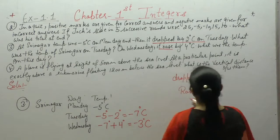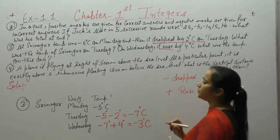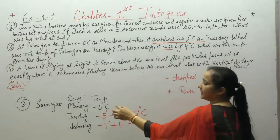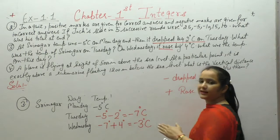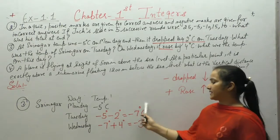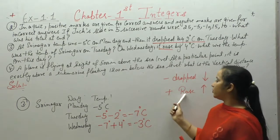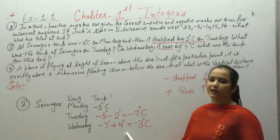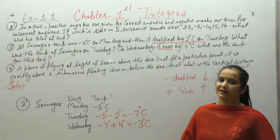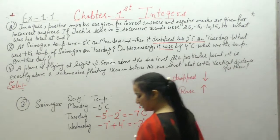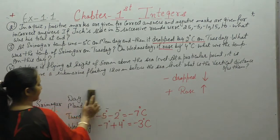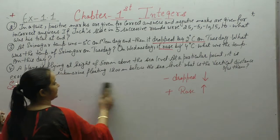'Rose' means increased, so positive sign. 'Dropped' means decreased, so negative sign. Monday was minus 5°C. Tuesday dropped 2°C, so minus 2, giving minus 7°C. Wednesday rose 4°C, so we add plus 4: minus 7 plus 4 is minus 3 degrees Celsius. Note it down. Clear? Let's move to the next one.